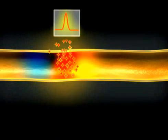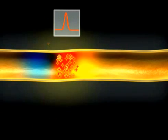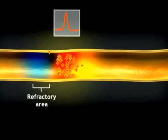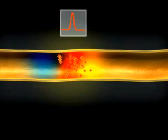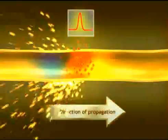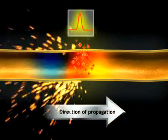The area of axon that fired an action potential a millisecond ago cannot become depolarized now. It is refractory, because its sodium channels are inactivated. In this way, the action potential propagates in only one direction, like a fuse.